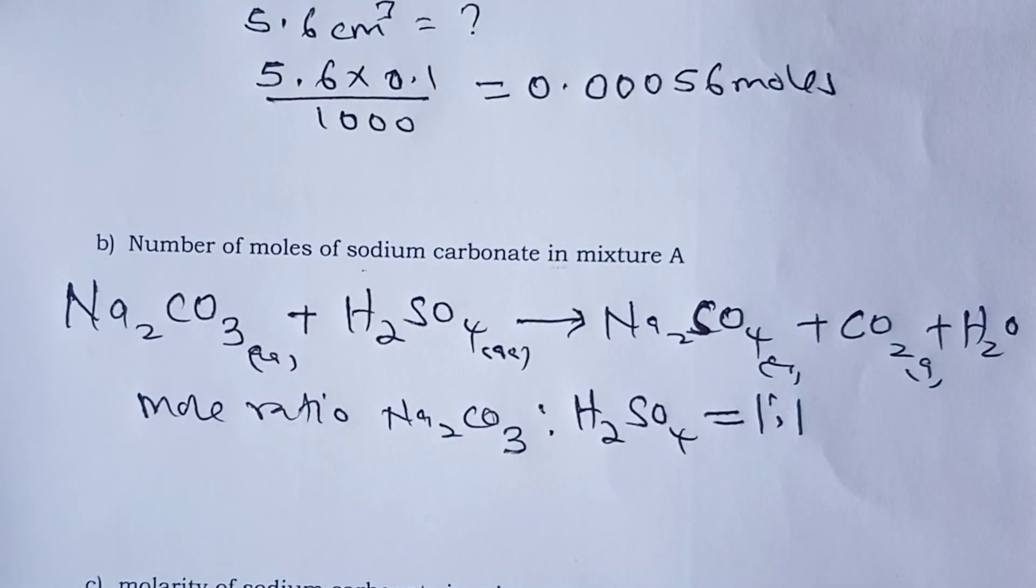The mole ratio between sodium carbonate, which is actually what we are being asked here, sodium carbonate in the mixture, to our dilute acid, sulfuric acid, we see is 1 is to 1 because our equation is balanced. So therefore, the number of moles of sodium carbonate in mixture A is the same as number of moles of sulfuric acid because mole ratio is 1 is to 1. So again, moles of carbonate would be the same as moles of sulfuric acid, and we get 0.00056 moles.